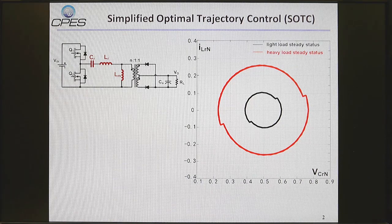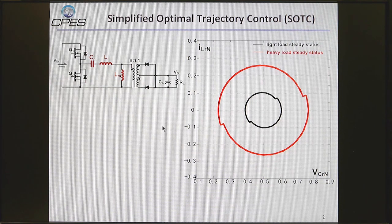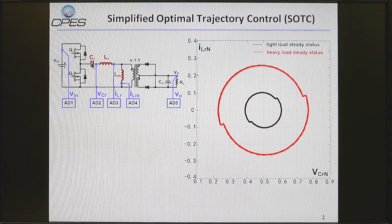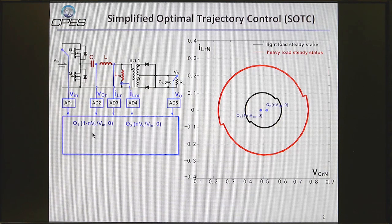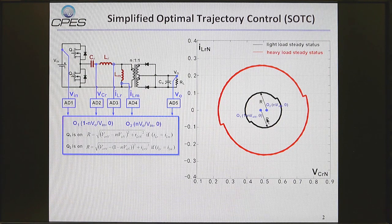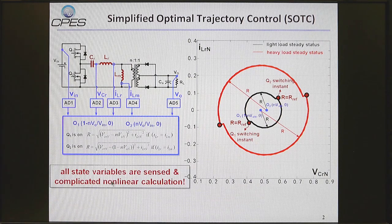First I will introduce the simplified optimal trajectory control. This is the steady-state trajectory under light load and heavy load conditions. With the conventional optimal trajectory control method, we need to sense the resonant capacitor voltage and current, and magnetizing current to determine the center, then calculate the radius and determine the switching instant. We can find that this method requires sensing all state variables and involves complicated calculations.